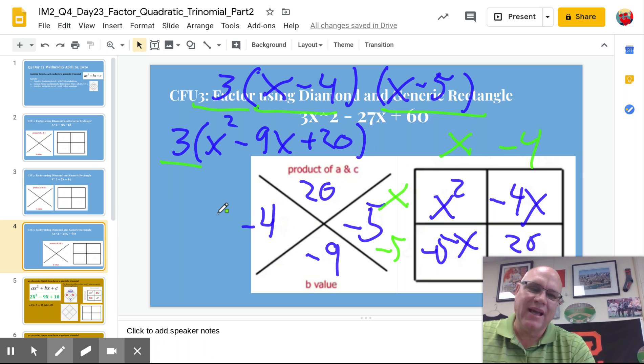Today's lesson is when after we pull out the greatest common factor, we're going to have an a value that's not 1. It could be 2, it could be 5, it could be a half. Whatever.